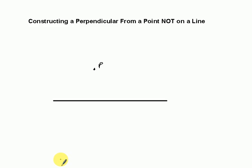In this video we are going to construct a perpendicular from a point that's not on a line. I've got point P up here, not on this line, and I want to construct a perpendicular, a line coming down this way.